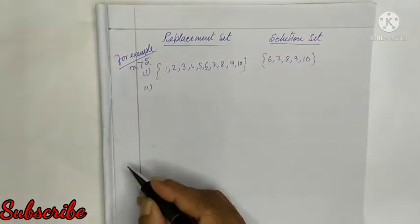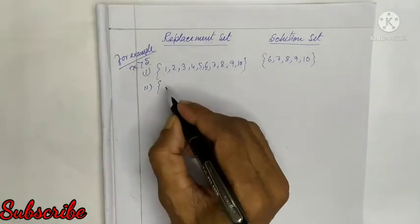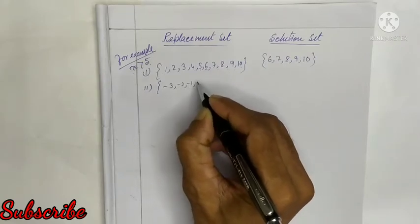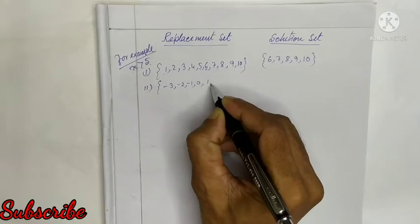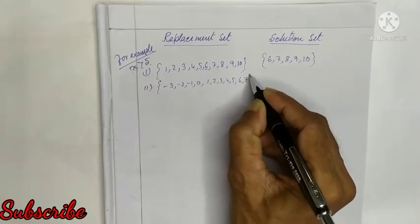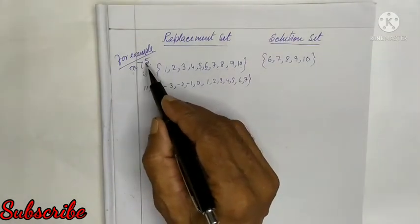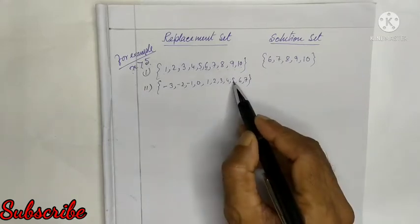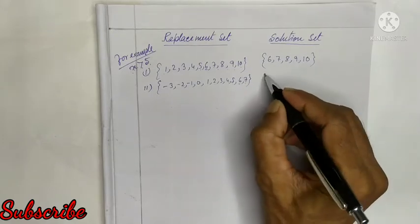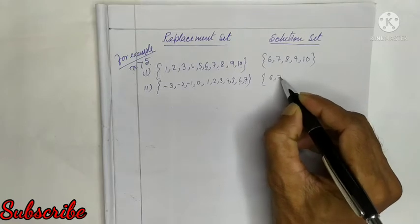Example 2: if the replacement set is {-3, -2, -1, 0, 1, 2, 3, 4, 5, 6, 7} and the condition is X greater than 5, then after 5 the available numbers are 6 and 7, so the solution set is {6, 7}.